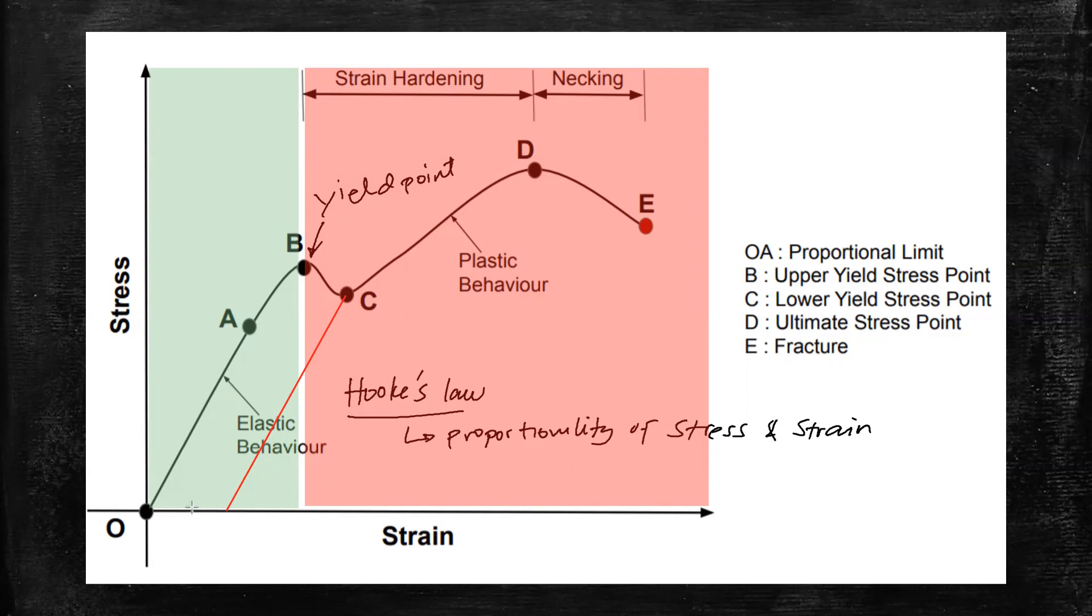Further increase with the load or force beyond point C produces a large amount of strain for a relatively small increase in stress until point D. At this point D, which is now called the ultimate stress point, the material is capable of holding the maximum force or stress. Beyond point D, it reaches the fracture.